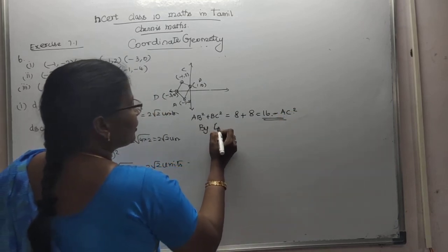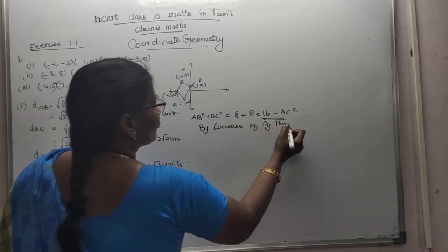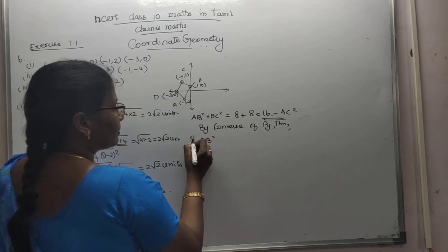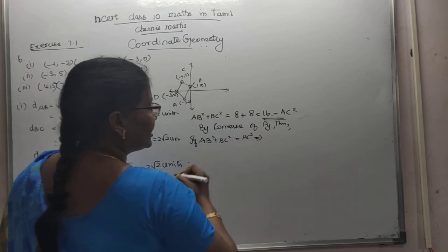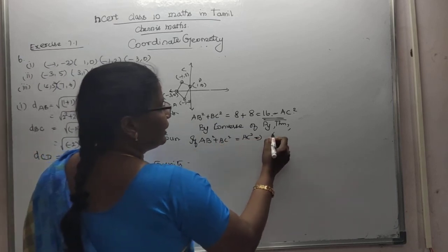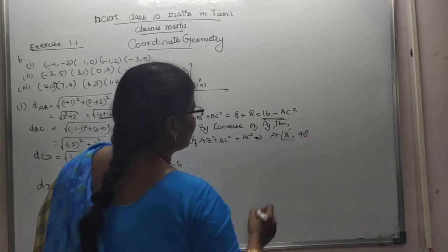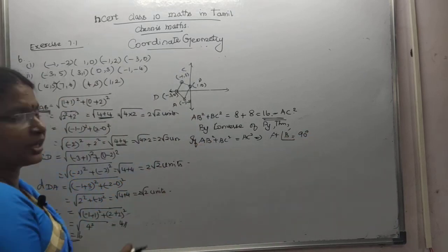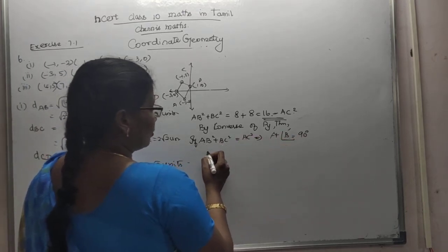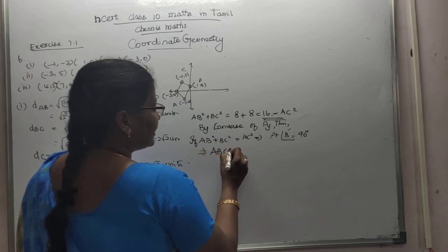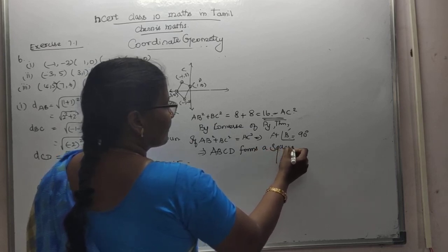By Pythagoras Theorem, by Converse of Pythagoras Theorem, if AB squared plus BC squared is equal to AC squared, that implies, at B, it forms a right angle. Angle B is equal to 90 degrees. Understood? AB squared plus BC squared, and the angle at point B is 90 degrees. So it forms a square. A, B, C, D forms a square. Understood?